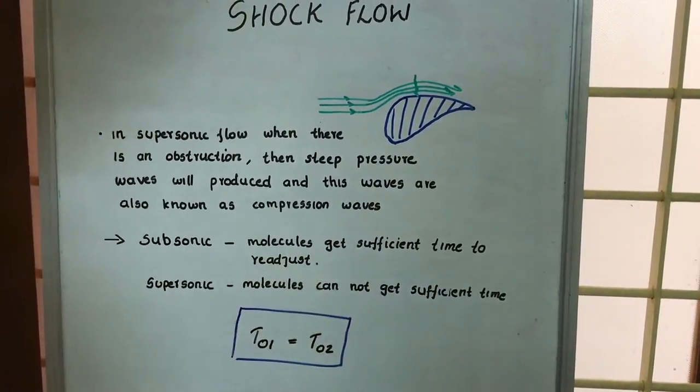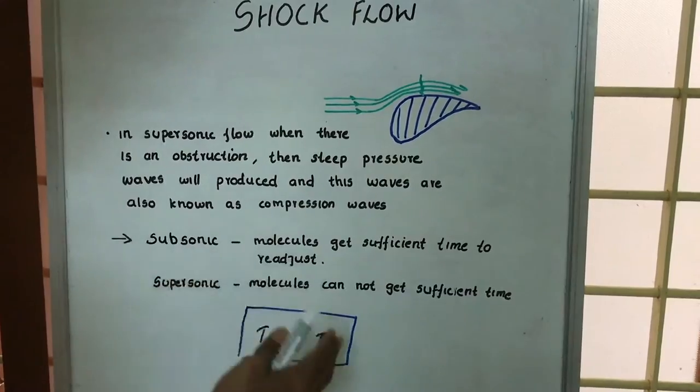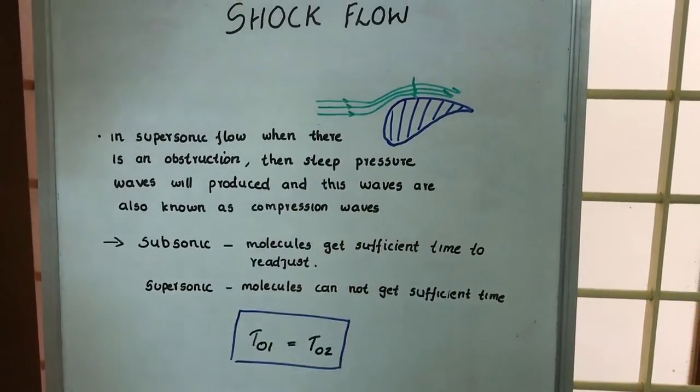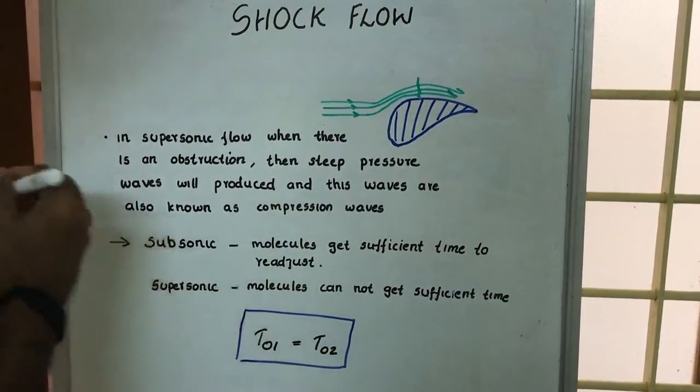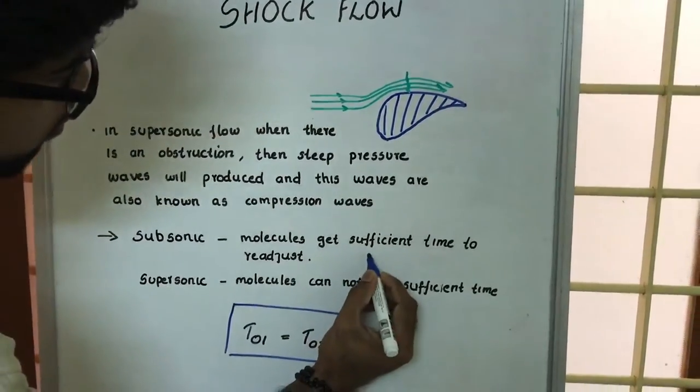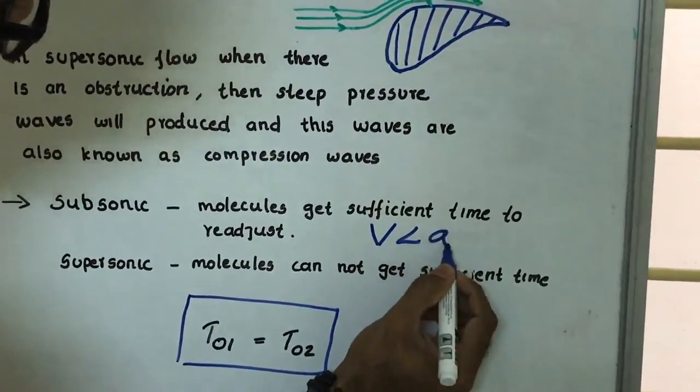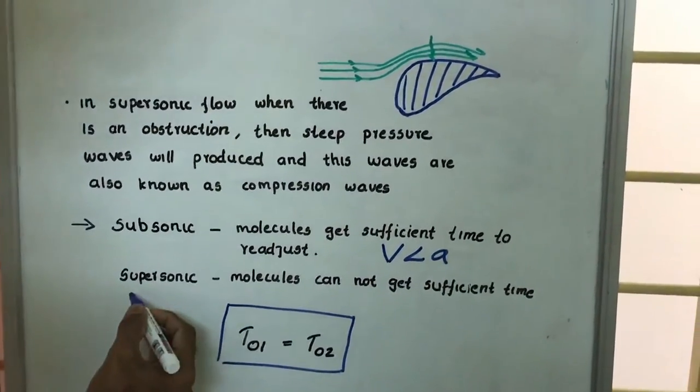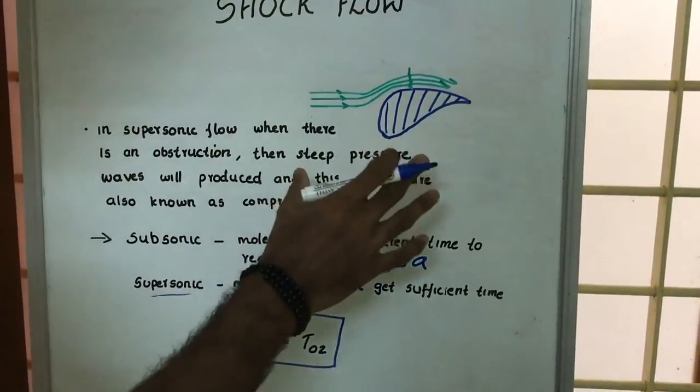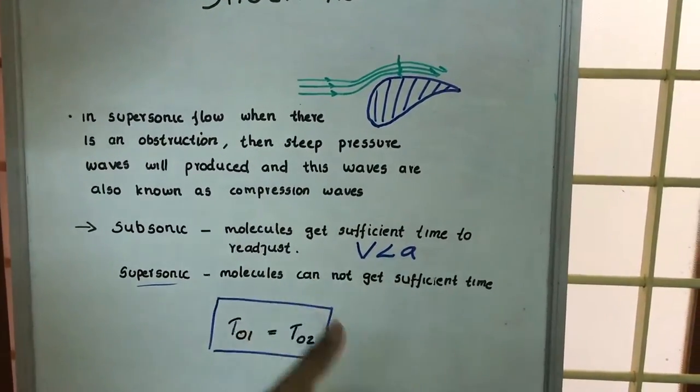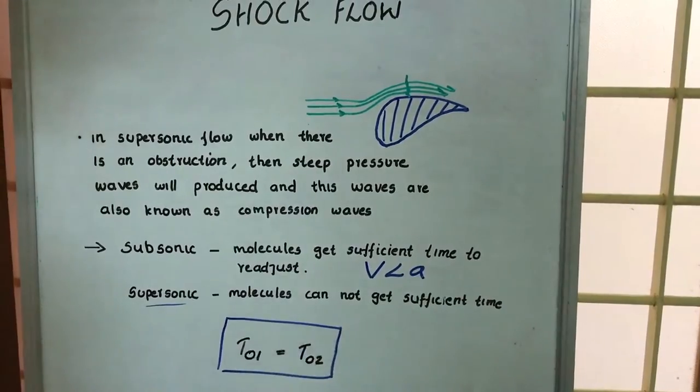Subsonic flow means the velocity of flow is less than the acoustic velocity, or V is less than a. In supersonic flow the molecules cannot get sufficient time to readjust themselves, which means that if the velocity of this flow is very high or the Mach number is greater than one, then they cannot get sufficient time.